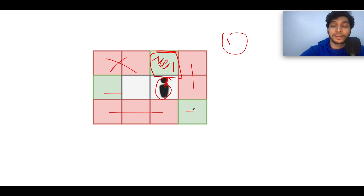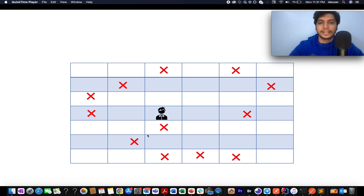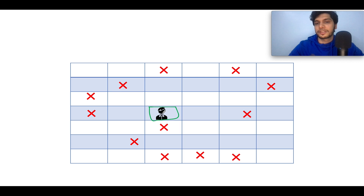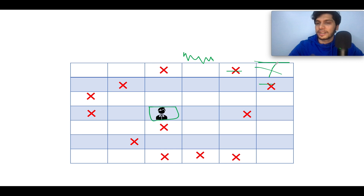Why BFS and not DFS? Let's understand with a slightly longer example. The entrance position given is the cell in the first row. Let me identify the exit locations reachable from this position. This position is one possibility; this one is not reachable because it is blocked by two walls. These locations are reachable — you can reach this cell by this route, this cell by this route, and this cell by this route.